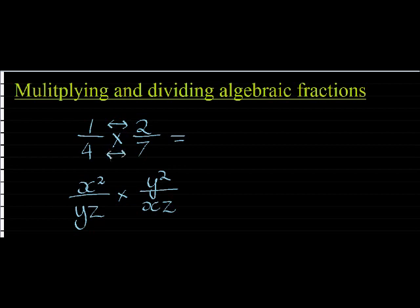But before we do that, we can first see if we can cancel common factors. Because in the end, this is 1 times 2 divided by 4 times 7. There are no terms in the numerator or denominator — no pluses and minuses — so I can simply cancel common factors. Here I've got a 2 that divides into itself once and into 4 two times, so I'm left with 1 divided by 2 times 7, which is 14.